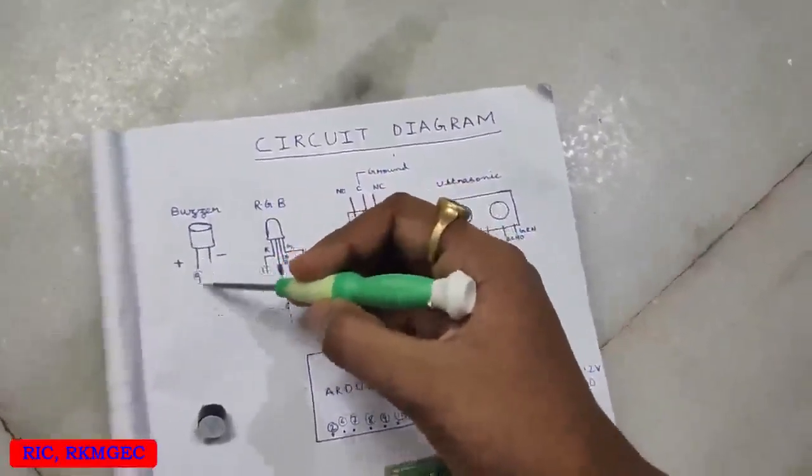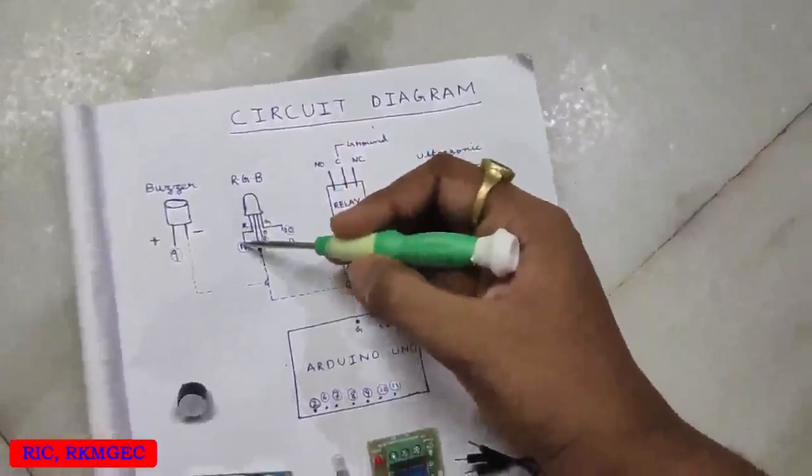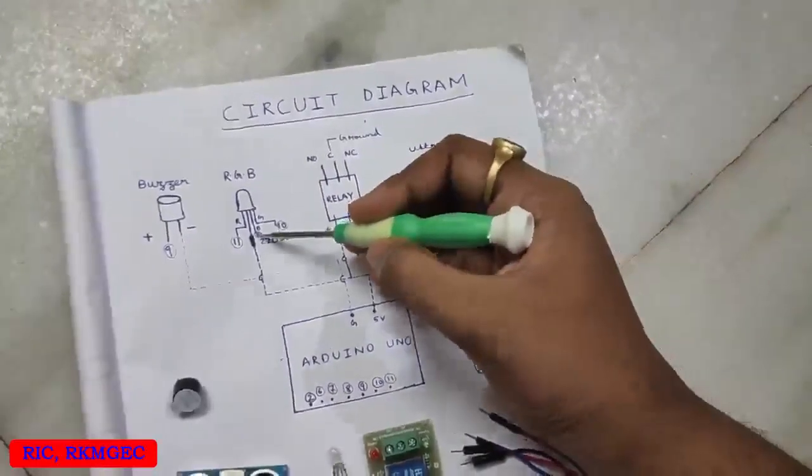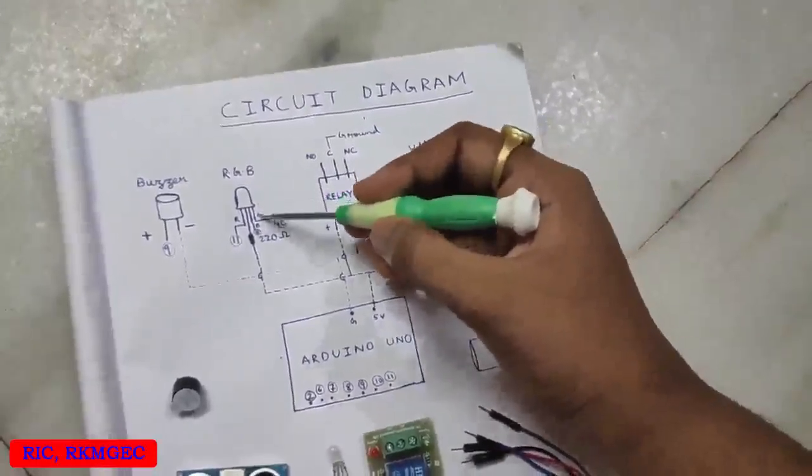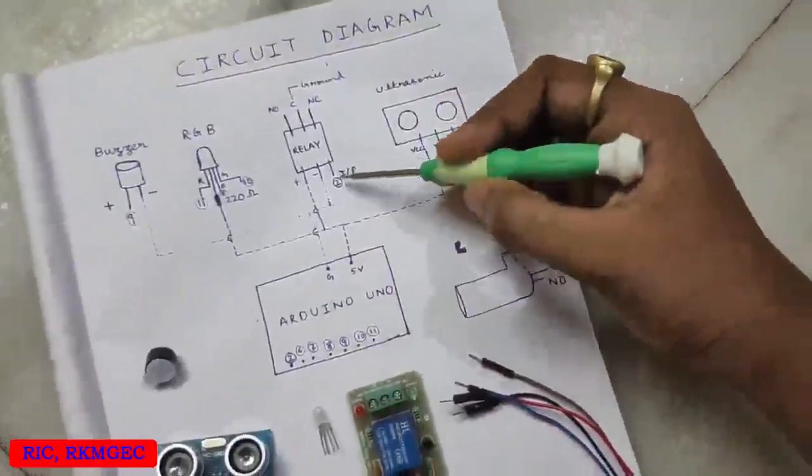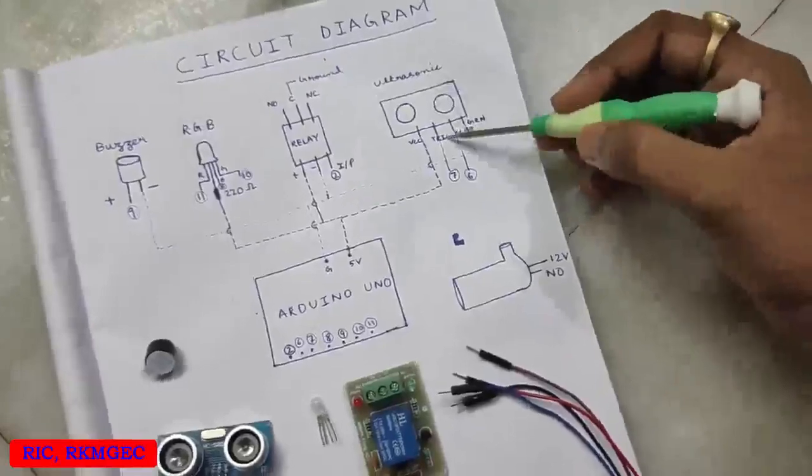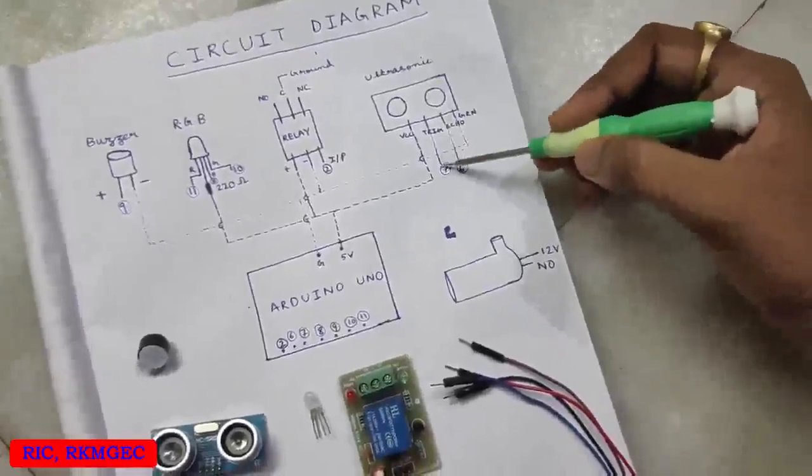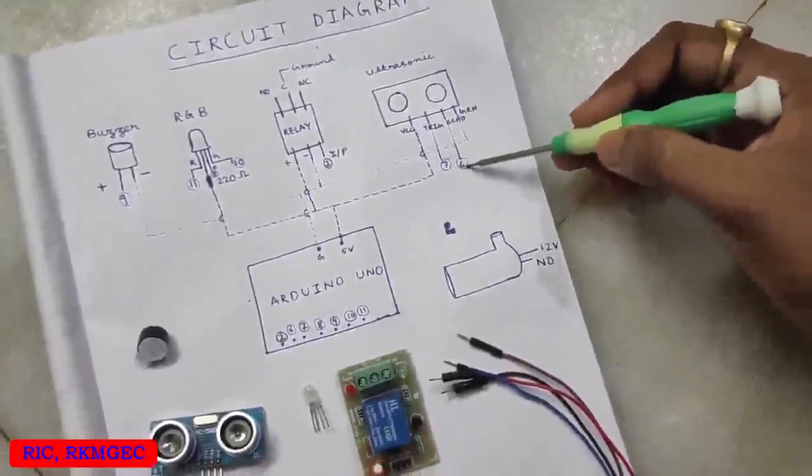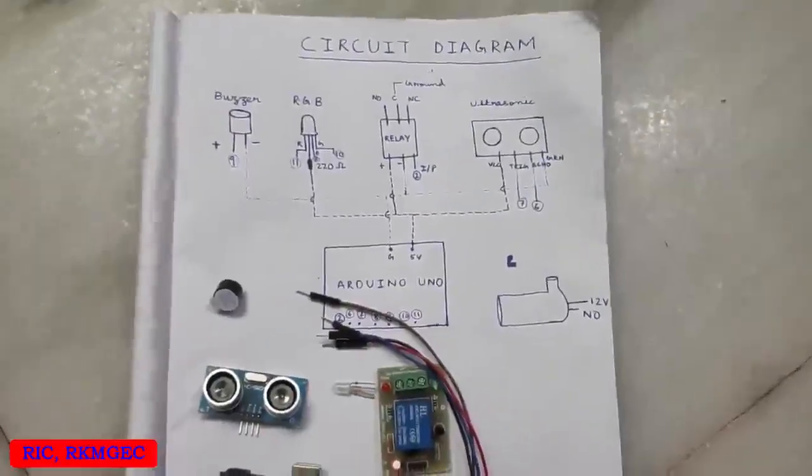Similarly in RGB light the red color will be connected to the 11th pin, the blue will be connected to 8th pin and the green will be connected to 10th pin. In the relay the input pin will be connected to the digital pin four. For the ultrasonic sound sensor the trigger pin will be connected to 7th pin and the echo pin will be connected to the 6th. So now let's start making the project.